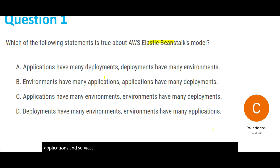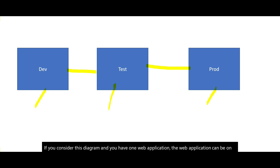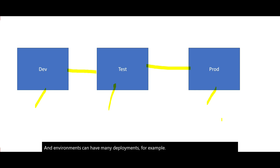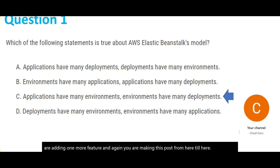The options here can be confusing, but always remember: applications have many environments. A web application can be on dev, test, and prod — so there are many environments, and each environment can have many deployments. For example, today you add one feature and deploy that code to test and then to prod. Tomorrow you add another feature and make another push. So each environment is having many deployments. Hence this is the right answer.